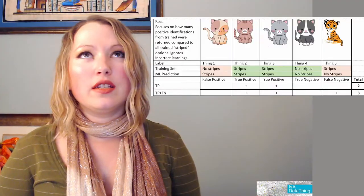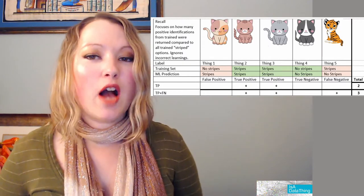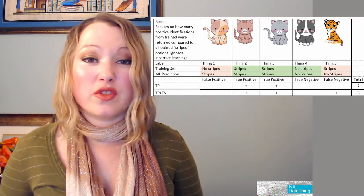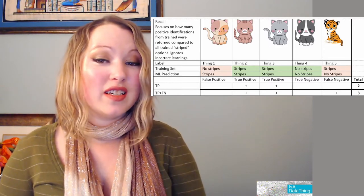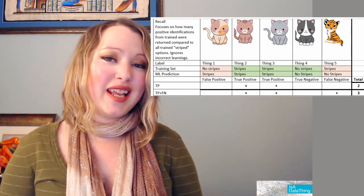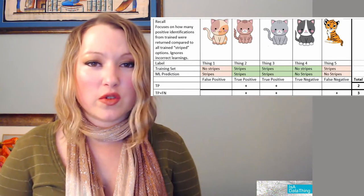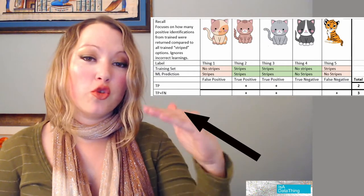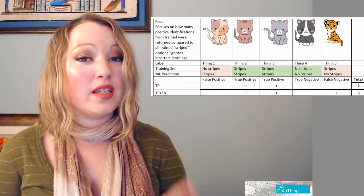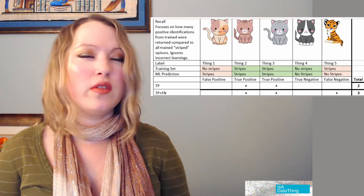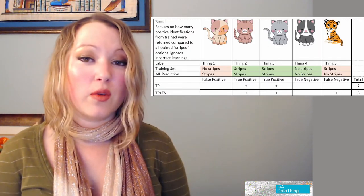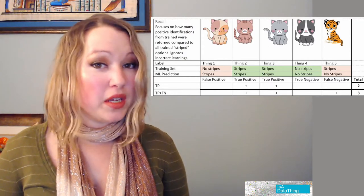Now let's move on to recall. Recall is looking at out of the things you got back, how many of them were true positives. If you were doing a search on cats with stripes and you only got one of them, that would meet precision but you missed two of them. So recall is trying to find out whether you got all, or the majority, of the search results you really should be getting. The way to measure that is true positives divided by true positives plus false negatives. False negatives are where we see with thing five — we taught it that it had stripes and the machine said no, this doesn't have stripes. So in a search application, thing five wouldn't show up in search results when somebody is looking for cats with stripes — that's bad recall because it should have come back.